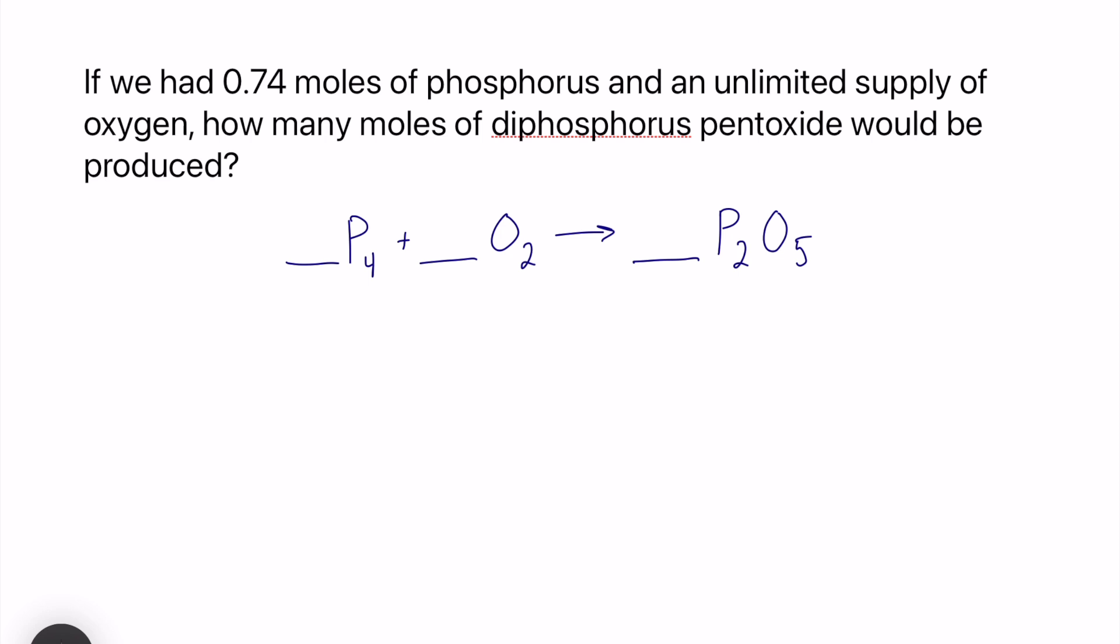So basically, the first step to any stoichiometry question is balancing the chemical reaction. This is the exact same reaction we balanced near the top of this video. We just have 1 P4, 2 P2O5, and we will have 5 O2. Again, remember those coefficients, they relate to the amount of moles of each substance required in this reaction.